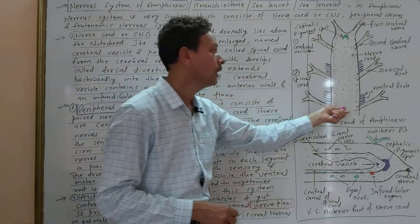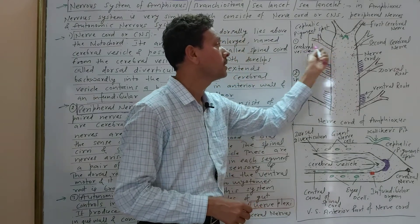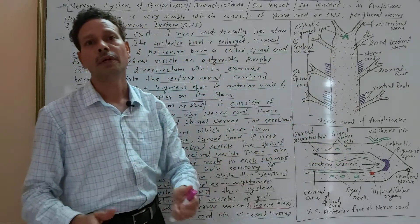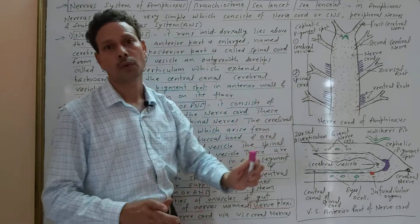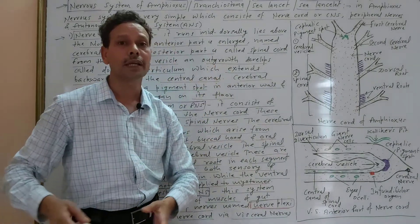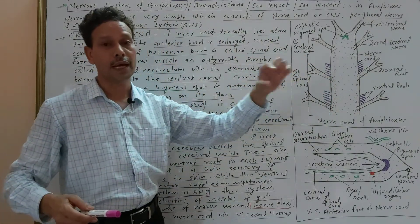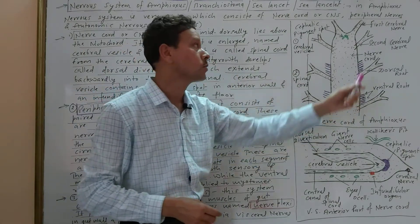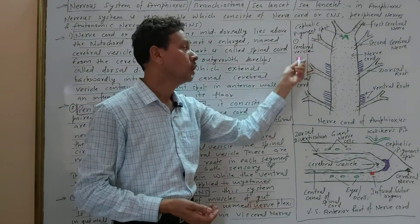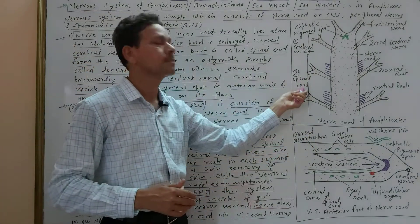This CNS or nerve cord is divided into two parts. The anterior part is the cerebral vesicle, which represents the brain. The maximum posterior part of this nerve cord is the spinal cord. So the nerve cord has two parts: the anterior cerebral vesicle representing brain, and the posterior elongated spinal cord.